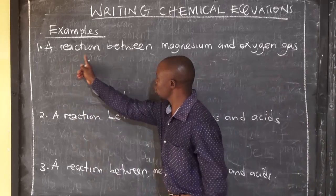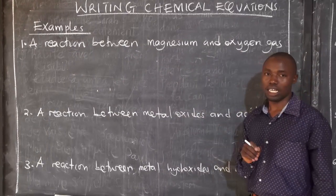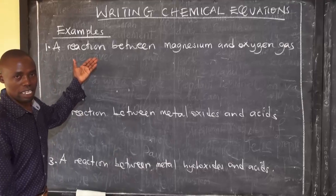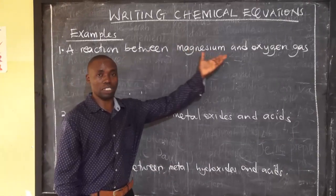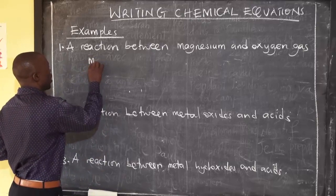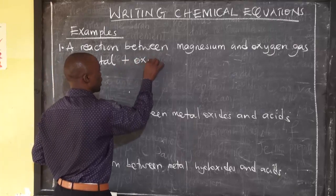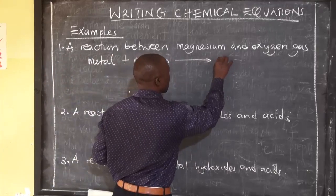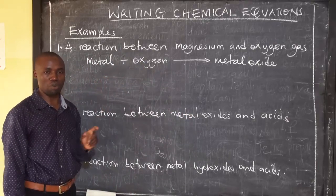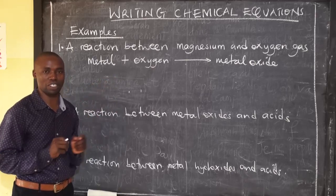Let's start with the first example: a reaction between magnesium and oxygen gas. This is a typical reaction between elements and oxygen. You just have some simple formulas — if you react any element plus oxygen, you're expected to get basically an oxide. Since this is a metal, metal plus oxygen gives us a metal oxide. I will make a similar video on how to balance chemical equations, but let's just learn how to write them with simple balancing.